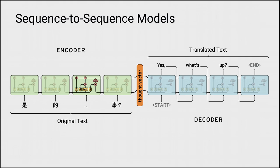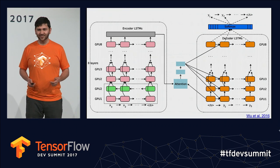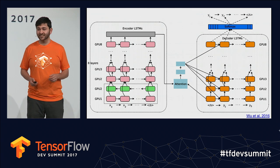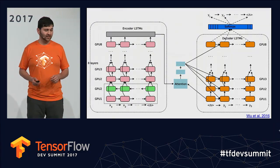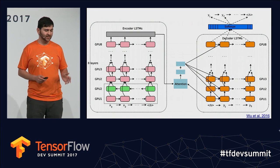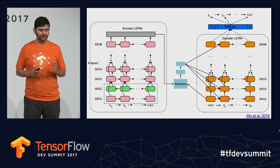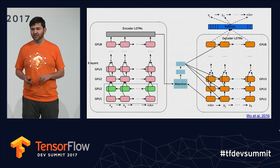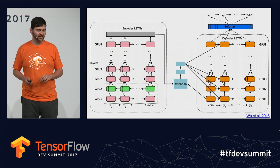In practice, the model is a little bit more complicated. You've seen this slide a couple of times today. Let me focus on the fact that, again, there's an encoder RNN on the left, some intermediate representation in the middle, and on the right we have a decoder RNN. We're going to refer back to this slide a couple of times.